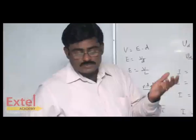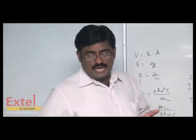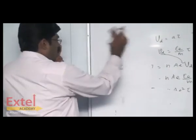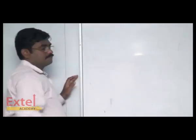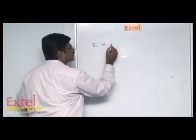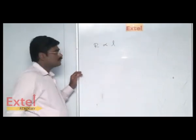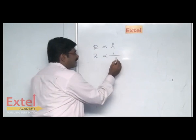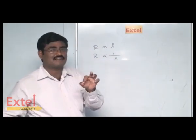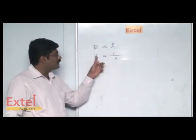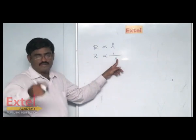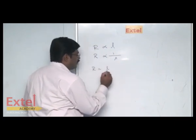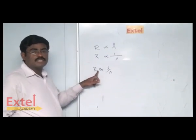The topic is electrical resistivity and conductivity. The resistance of a metal depends on two important factors: resistance R is directly proportional to the length of the conductor, and inversely proportional to the area of the conductor. The area means the thickness of the conductor. So the resistance of a conductor is inversely proportional to its thickness. Combining these, R is directly proportional to L divided by A.